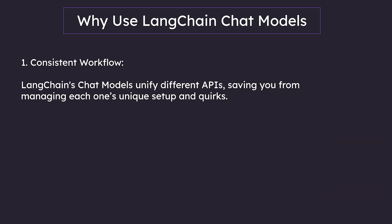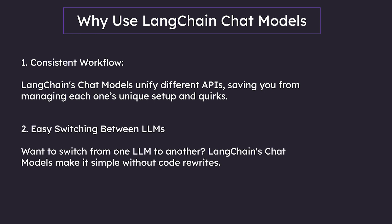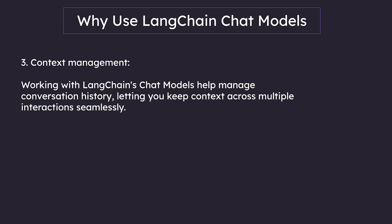Reason number one: consistent workflow. LangChain's chat models unify different APIs, saving you from managing each one's unique setup and quirks. Reason number two: easy switching between LLMs. If you want to switch from one LLM to another, LangChain's chat models make it very simple without a lot of code changes. Reason number three: context management. Working with LangChain's chat models helps manage conversation history, letting you keep context across multiple interactions seamlessly.